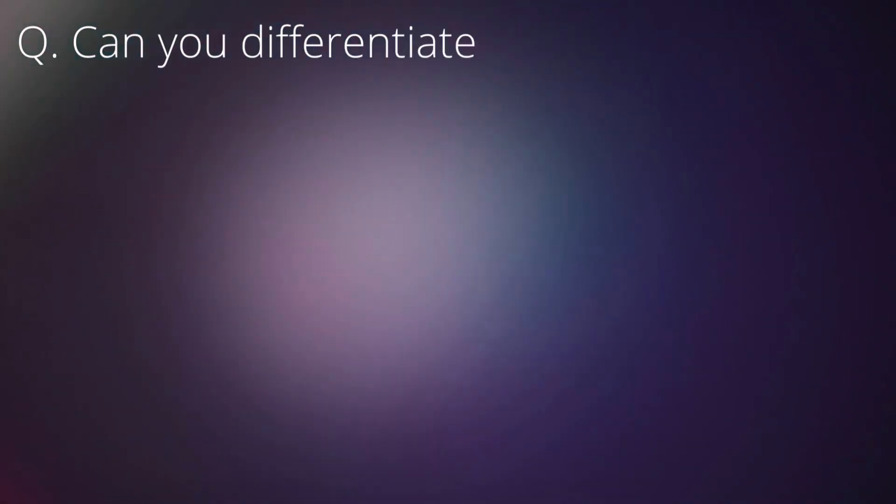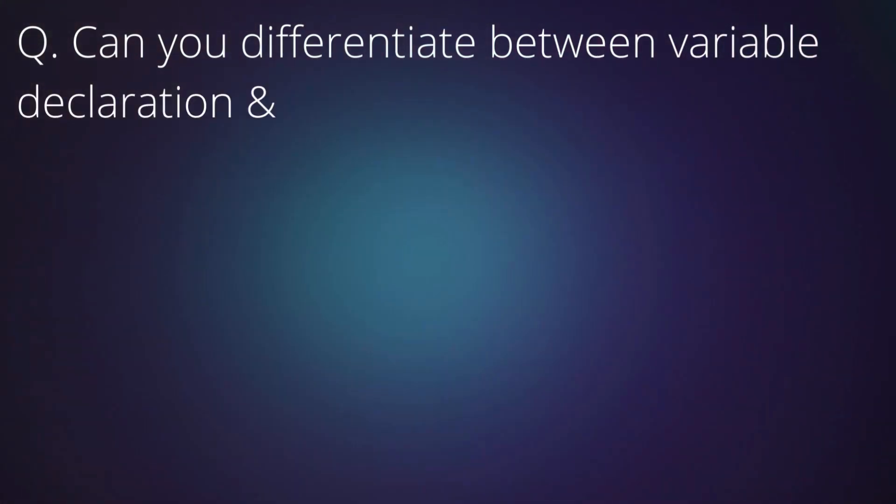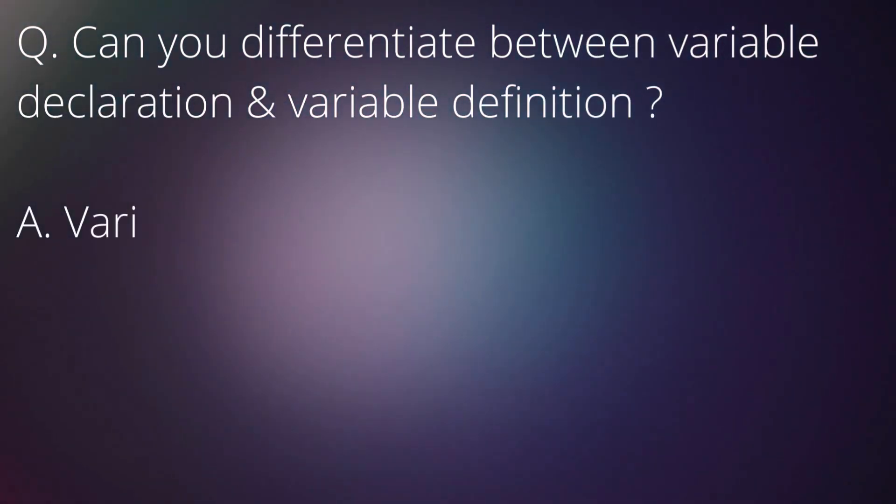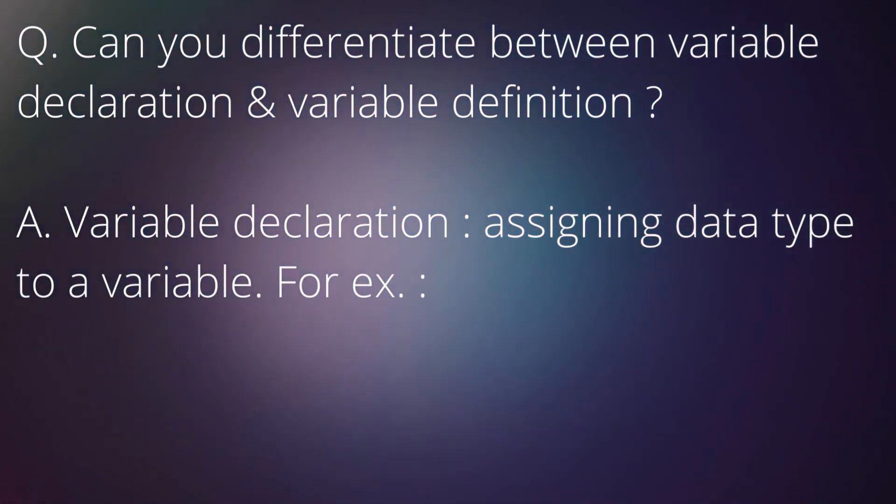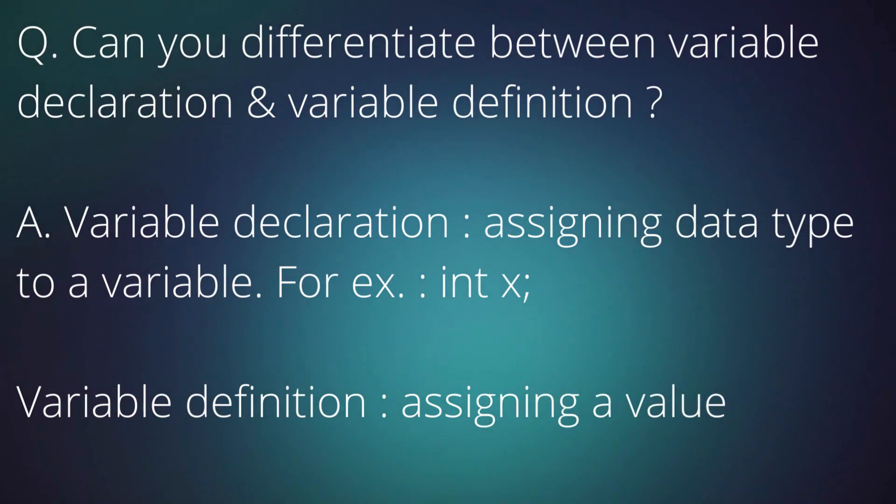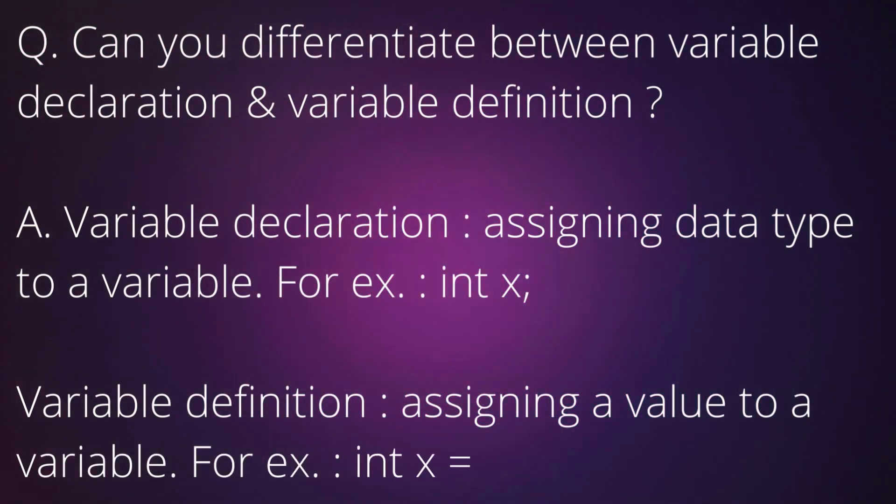Q: Can you differentiate between variable declaration and variable definition? A: Variable declaration: assigning data type to a variable. For example: int x. Variable definition: assigning a value to a variable. For example: int x equals 10.